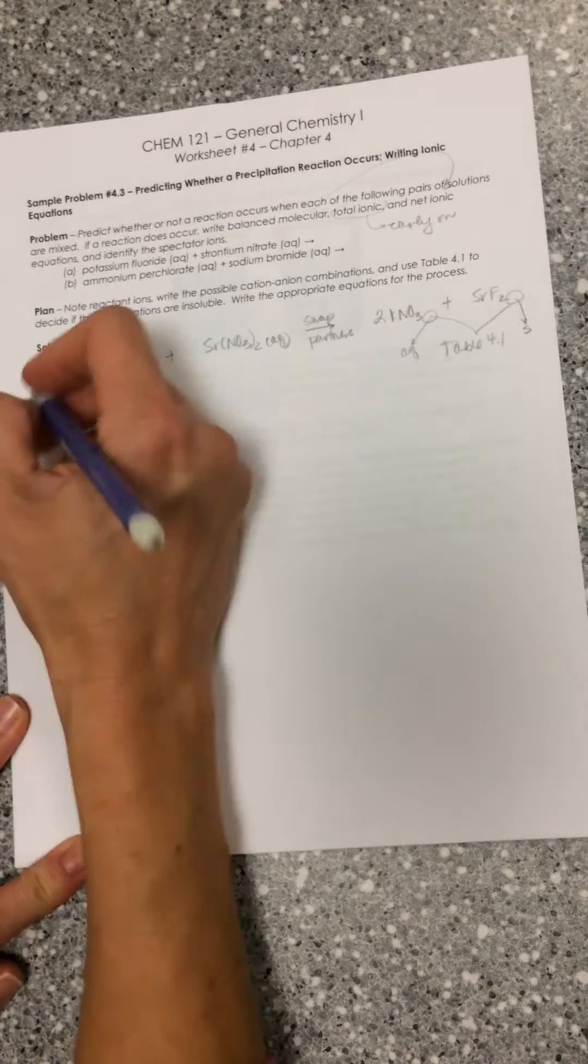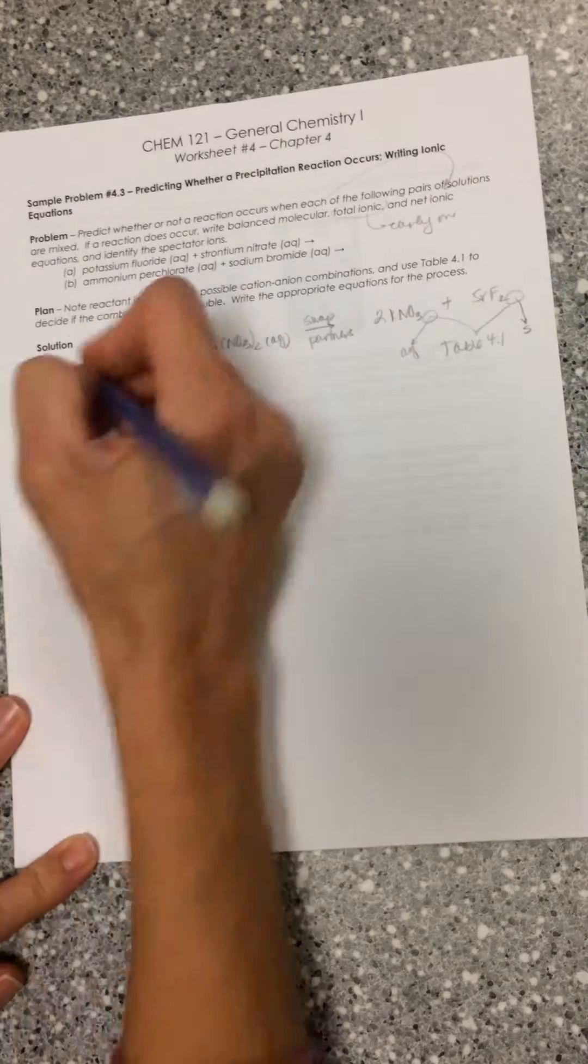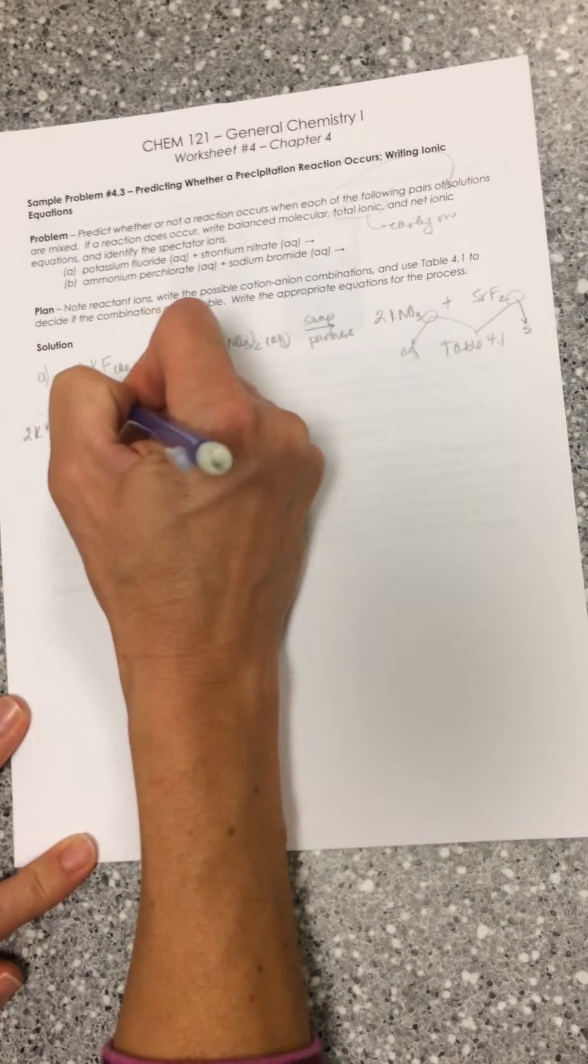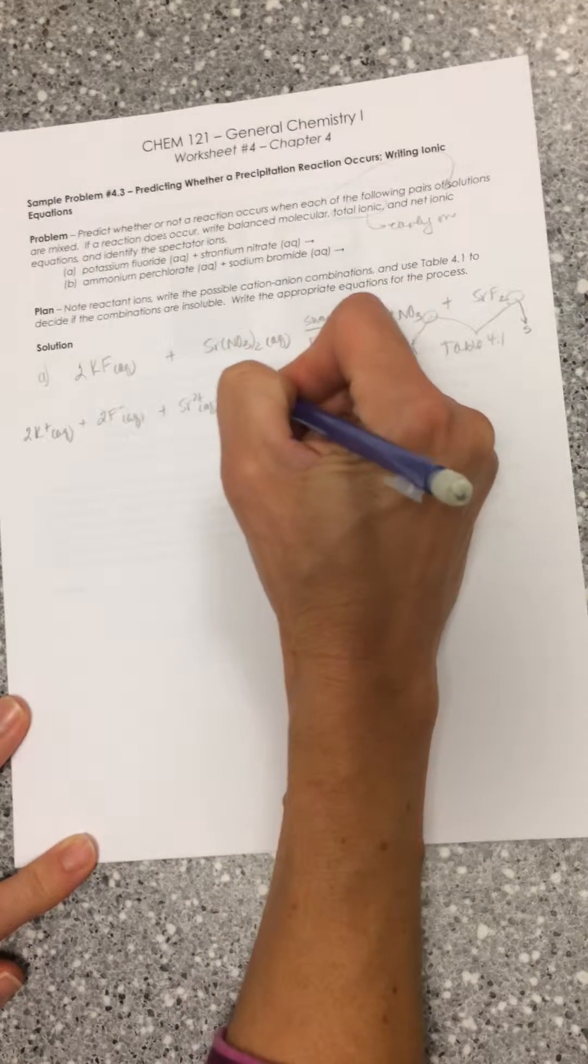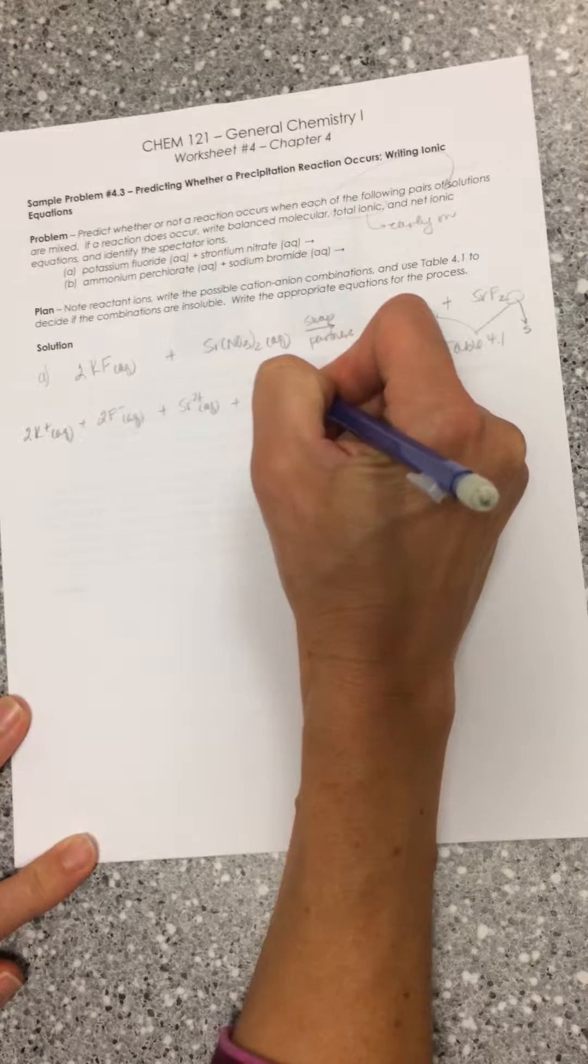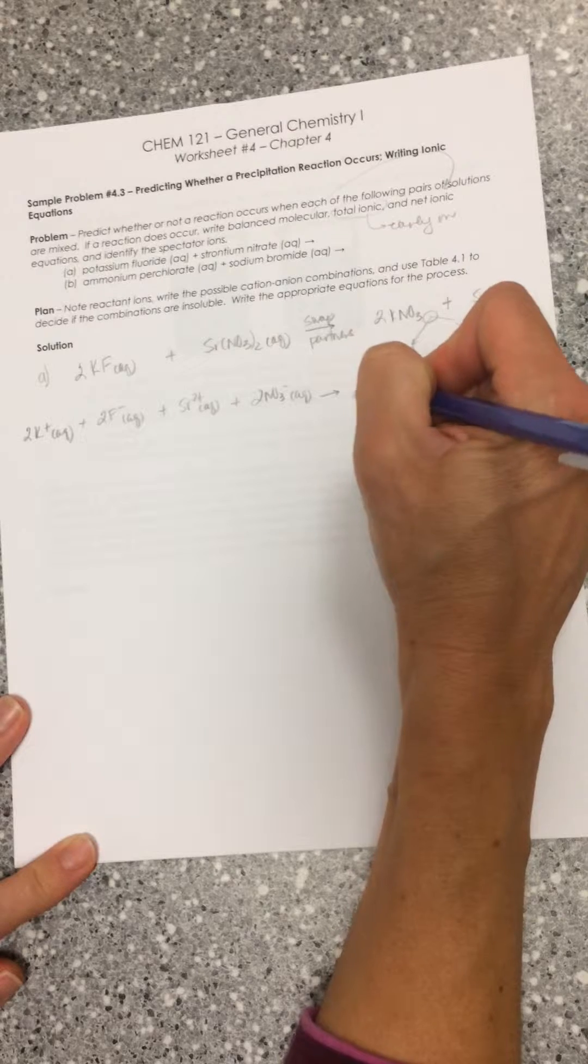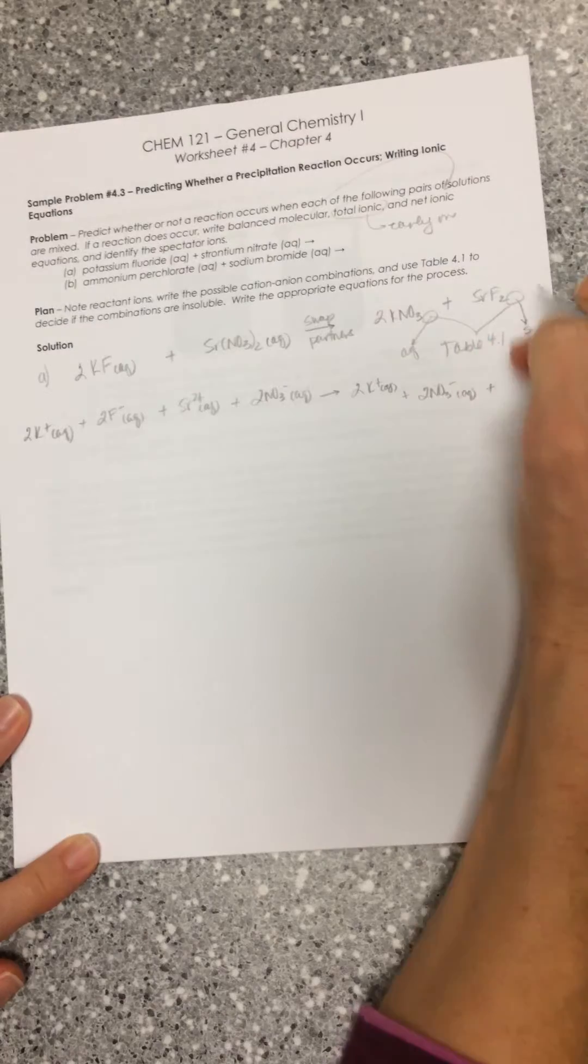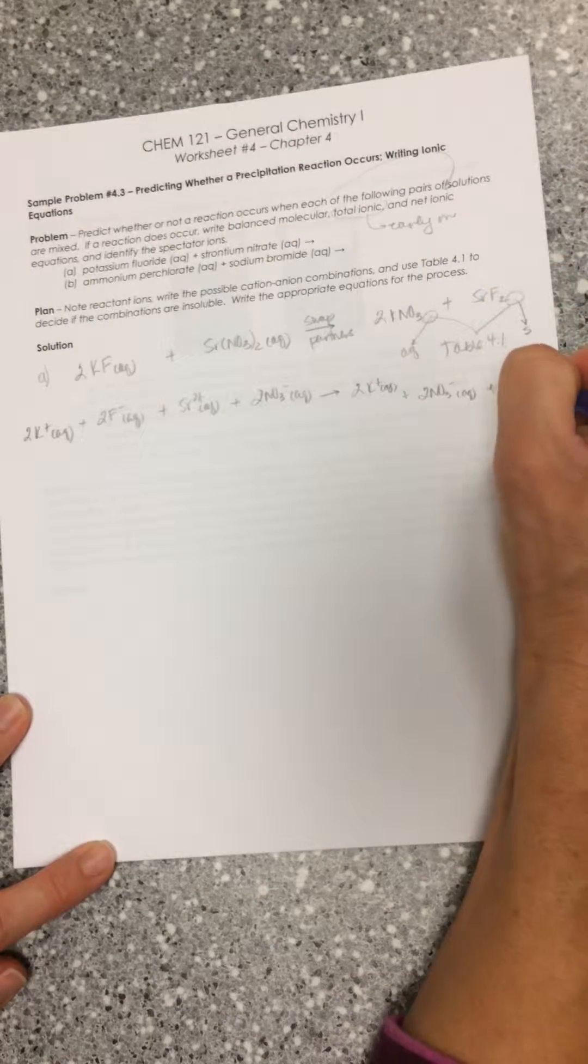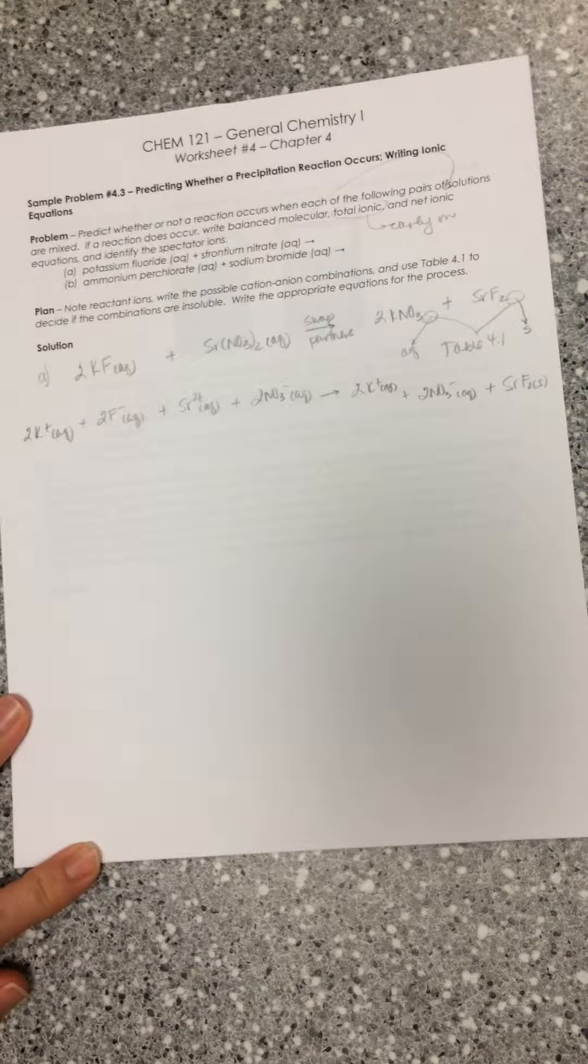Writing the total ionic is very tedious. Anytime you have something aqueous, you have to write these species separate. We've got two K+, two F-, then Sr2+, two NO3-. We form two K+, two NO3-. And because this was solid, it stays like that in our total ionic equation.